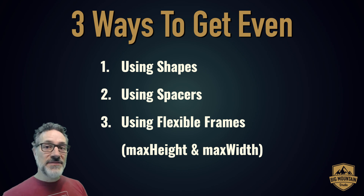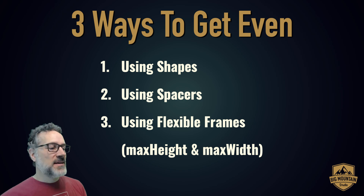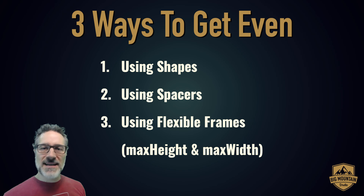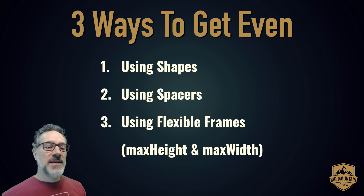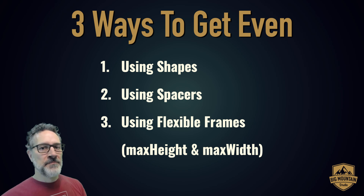So you just learned three different methods for evenly spacing views on your screens. One is to use shapes — shapes are push-out views, so they compete for space and distribute it evenly amongst themselves, and then you use an overlay to put something inside those shapes. The second method is to use spacers, which give you equal amounts of space when used in between views. The third way is to use the frame with max width or max height set to infinity, which takes a pull-in view and makes it a push-out view — turning that button into a shape that extends out and competes for space evenly. I hope this helps you with creating views in SwiftUI.